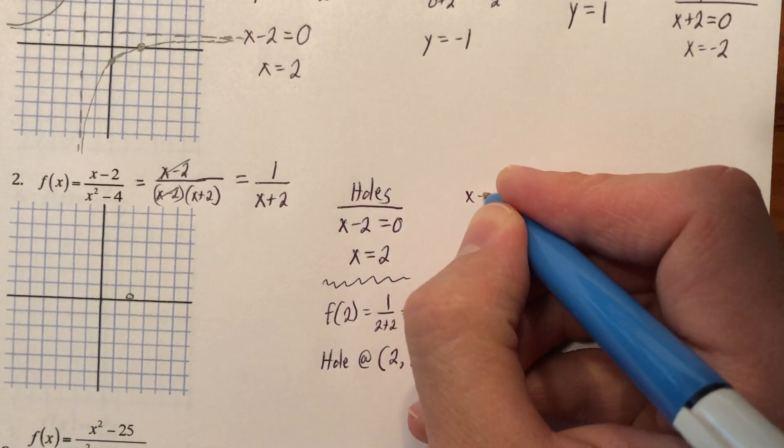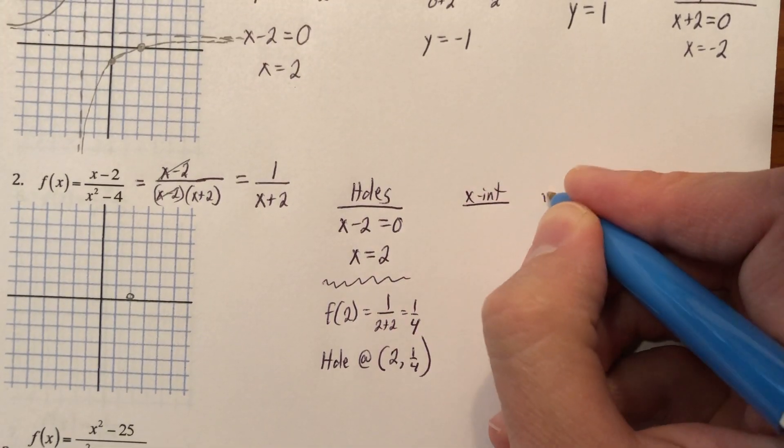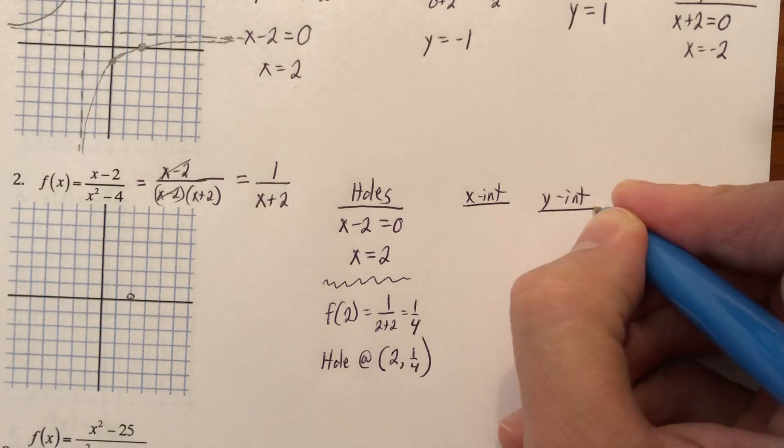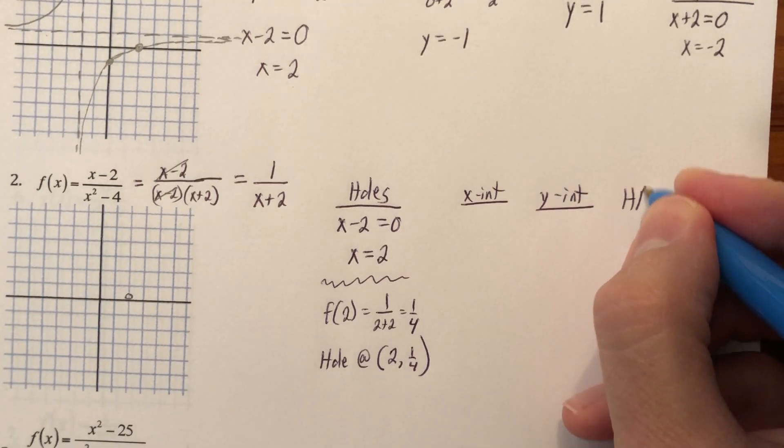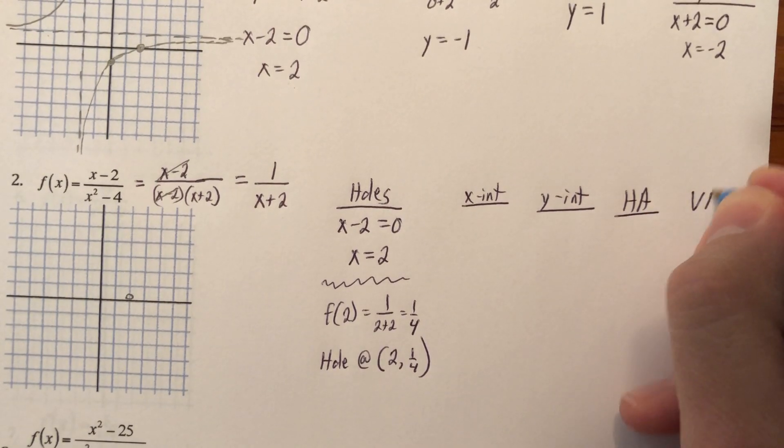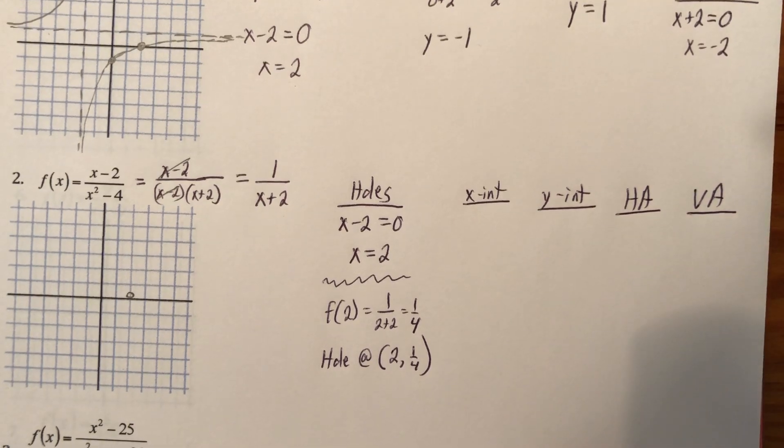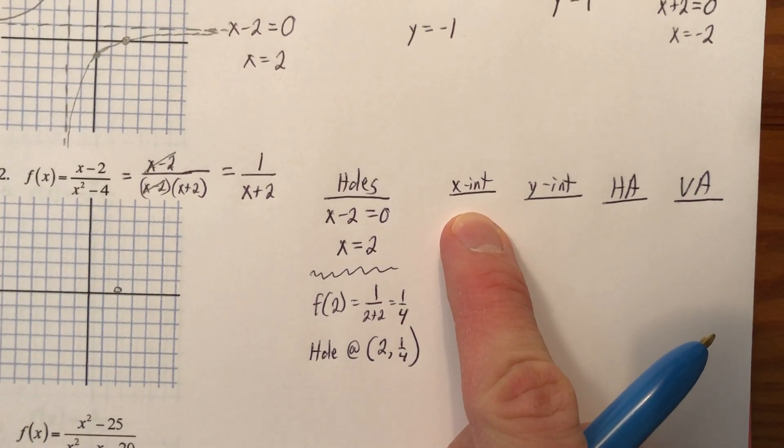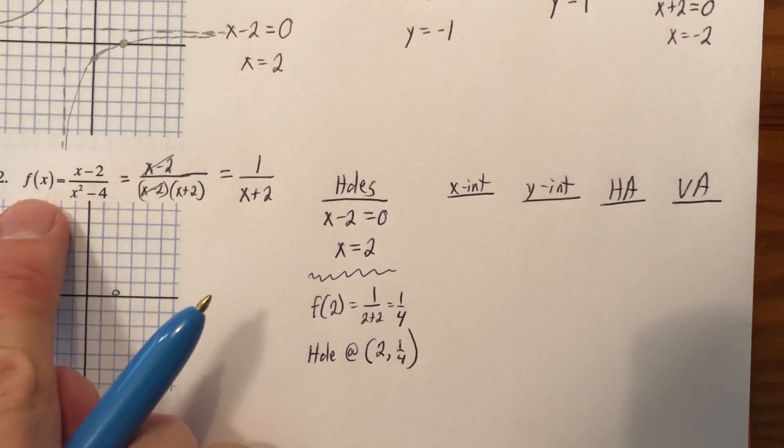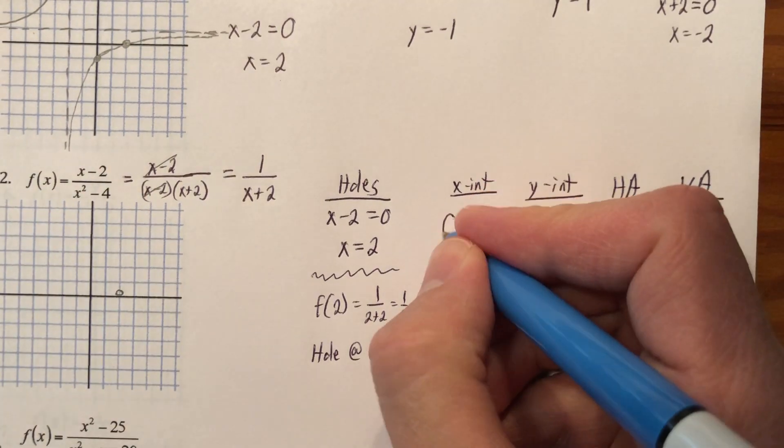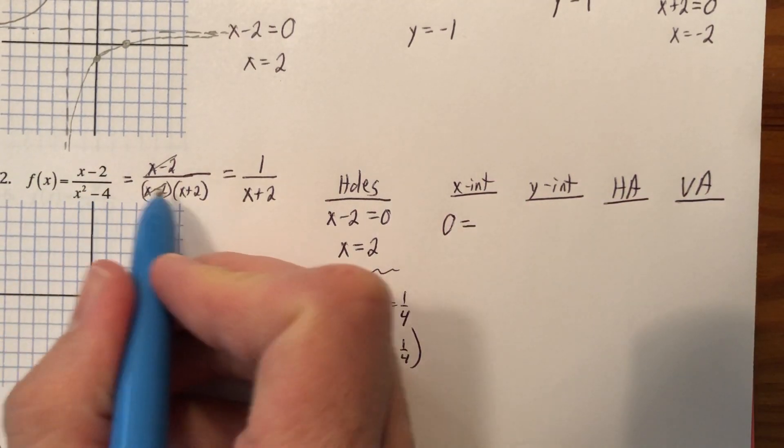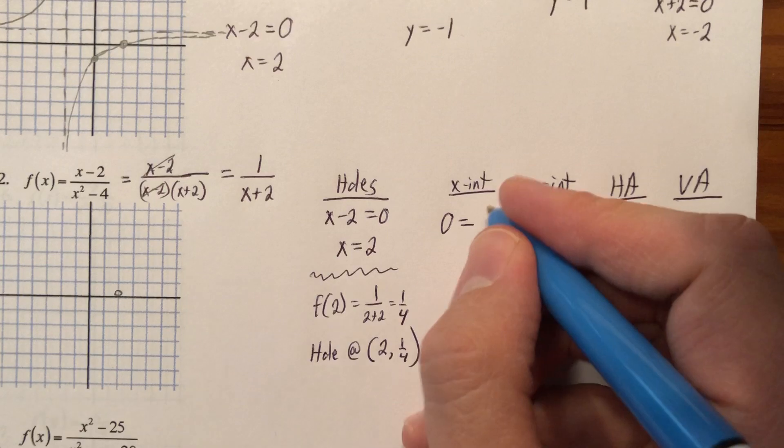So let's do some x-intercepts. Let's do some y-intercepts. Let's do some horizontal asymptotes. Let's do a vertical asymptote. Let's do all kinds of stuff. x-intercept is where y equals 0. So what I'm going to do is say, well, this equals 0. So 0 equals, let's not go here. Let's go to the one that's been reduced.